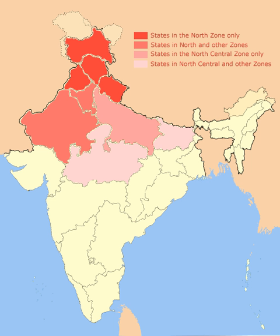Hinduism is the dominant religion in North India. Other religions practiced by various ethnic communities include Islam, Sikhism, Jainism, Zoroastrianism, Judaism, Baha'i, Christianity and Buddhism.